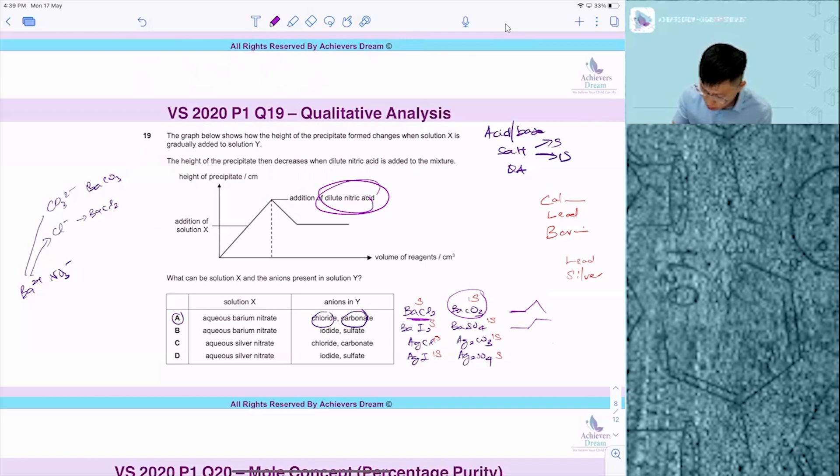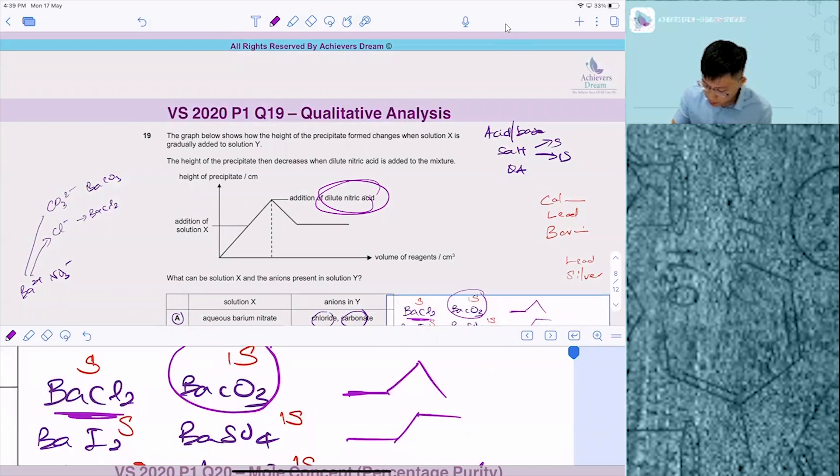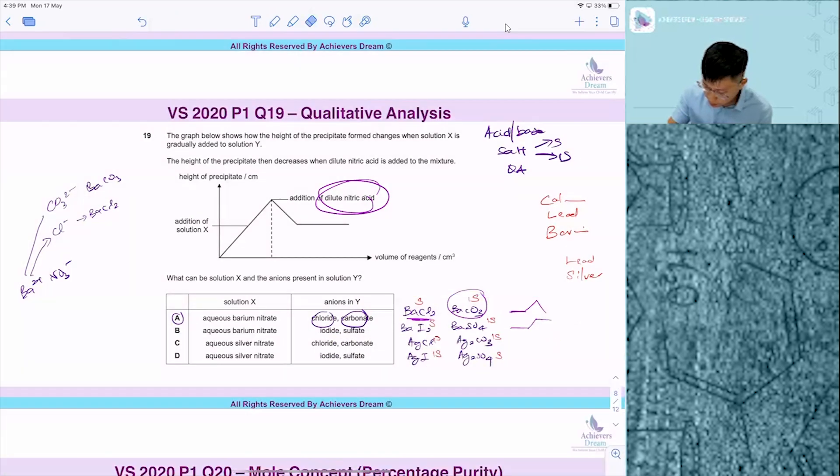Then AgCl PPT go up one level. Ag2CO3 go up one level again. AgCl, Ag2CO3, and this time carbonate plus acid, you go down. Then straight line like this. So this is the graph, which is C is your answer. Because AgCl don't react with nitric acid, Ag2CO3 reacts with acid.